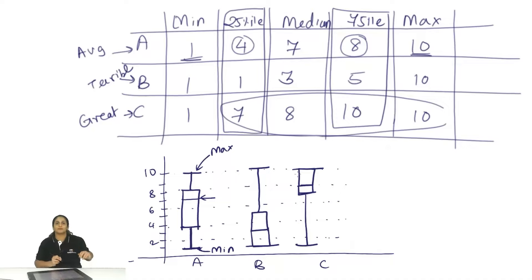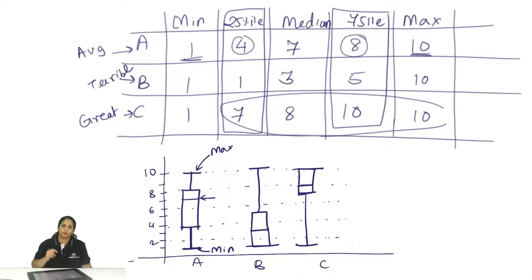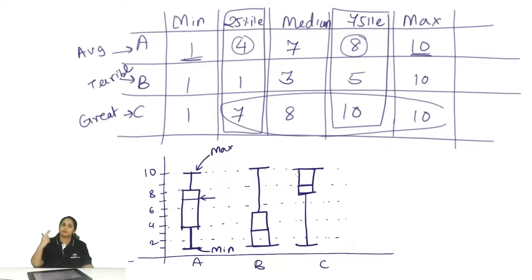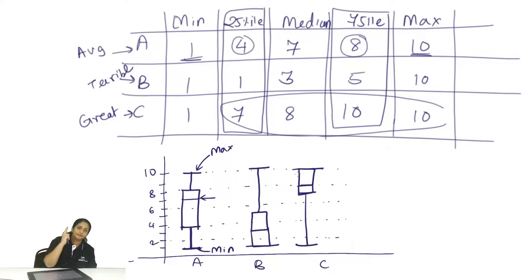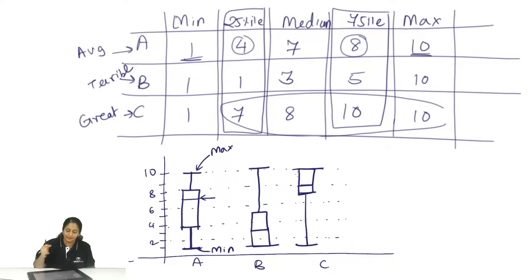So this is basically what a box and whiskers plot is. It shows you the median value, the minimum value, the maximum value, the 25th percentile value, and the 75th percentile value. This is exactly what a box and whiskers plot represents.